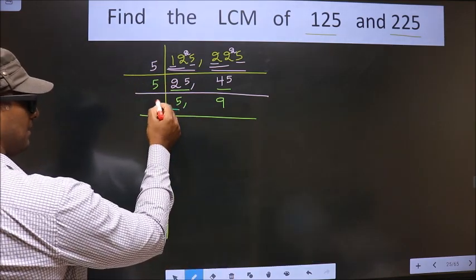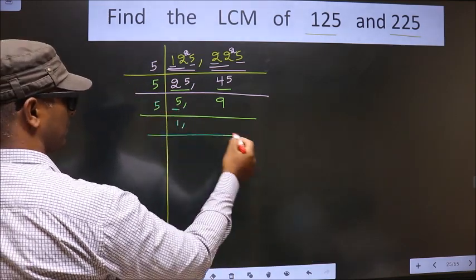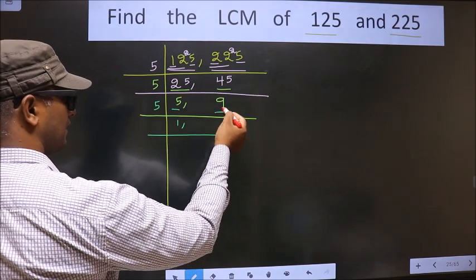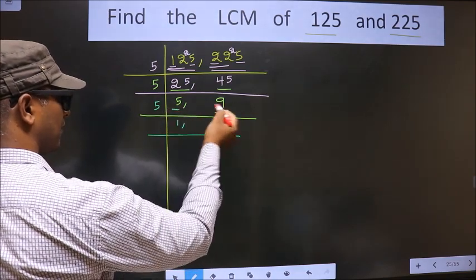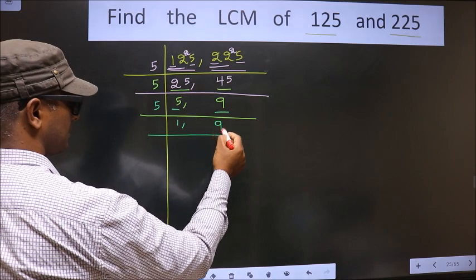Now here we have 5. 5 is a prime number, so we take 5 once 5. The other number is 9. 9 is not divisible by 5, so you write down as it is.